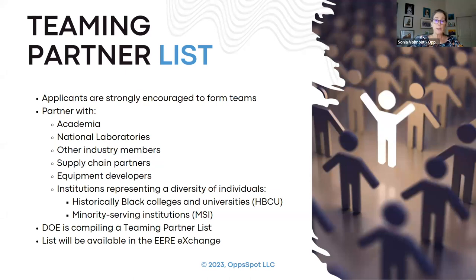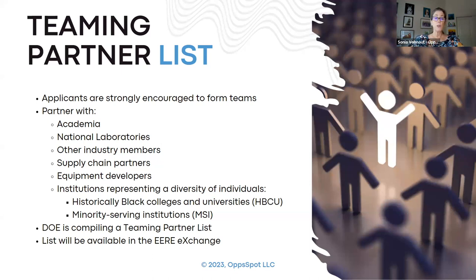Regarding the teaming partner list: DOE will provide it through the EERE Exchange site, and applicants are very strongly encouraged to form teams. You can partner with academia, national laboratories, other industry members, supply chain partners, equipment developers, or universities and research institutions with diverse individuals. Make sure you look at these teaming partner opportunities — DOE will compile them and they'll be available on the EERE Exchange.